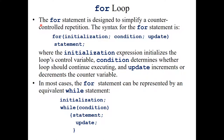The for loop is designed to simplify counter-controlled repetition. Its syntax places all three control elements in the loop header: for (initialization; condition; update) statement. The initialization expression sets the counter, the condition determines whether the loop continues, and the update increments or decrements the counter variable. It is a very elegant loop.